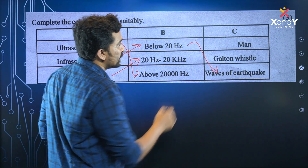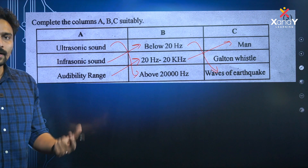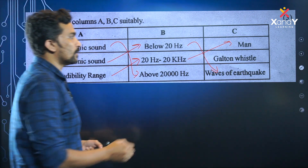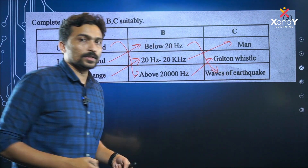Complete the following about audible range. We can see the range. Above the audible range is ultrasonic sound. Galton whistle is used, and dogs can hear ultrasonic sound.